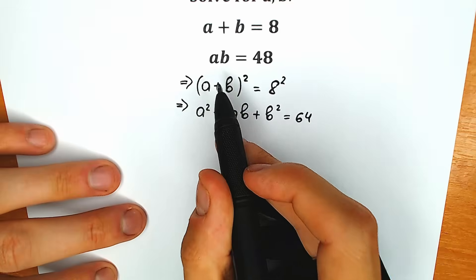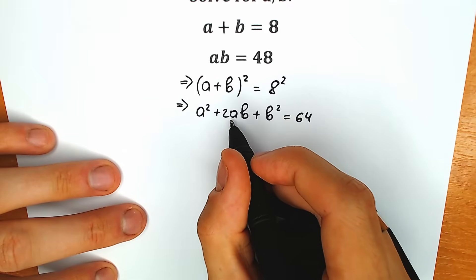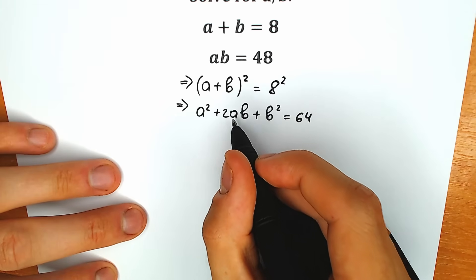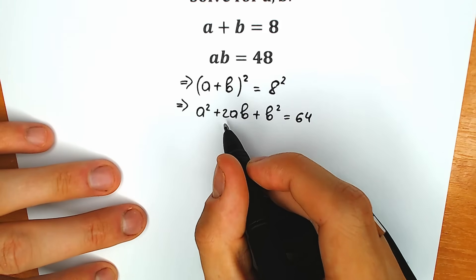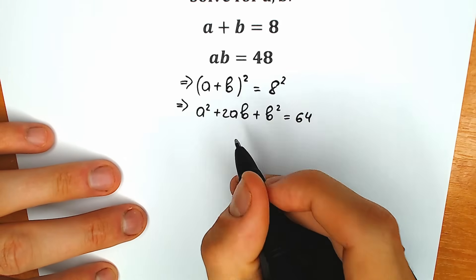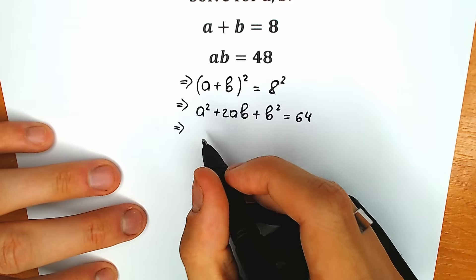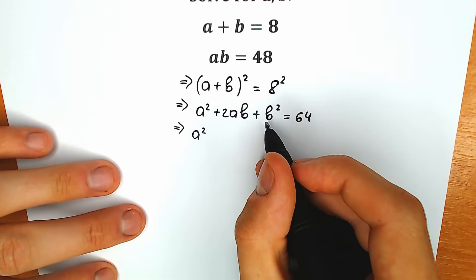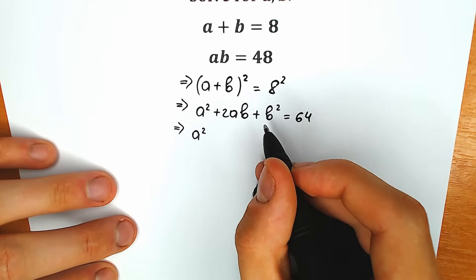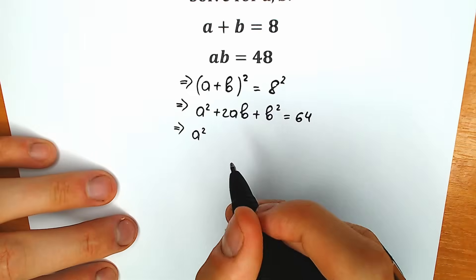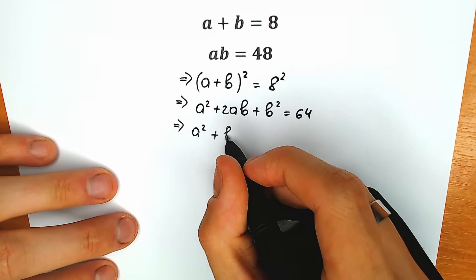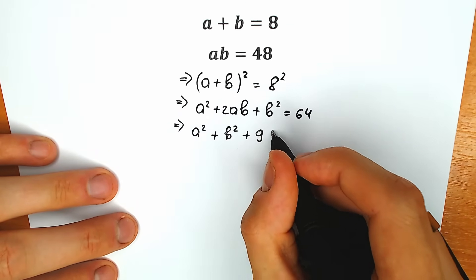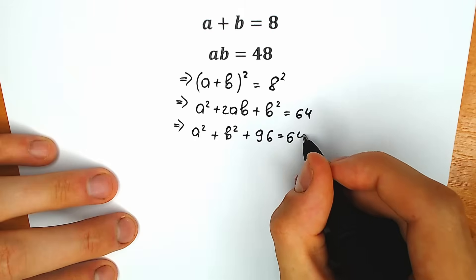Now, 2ab — since ab equals 48, we can plug in 48, and times 2 we have 96. So this expression equals 96. So we have a squared plus b squared plus 96 equal to 64.